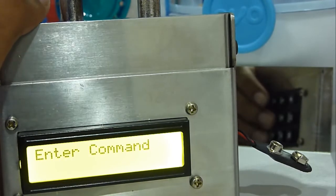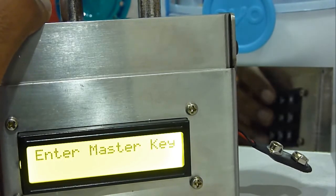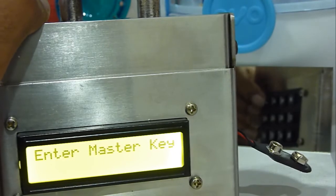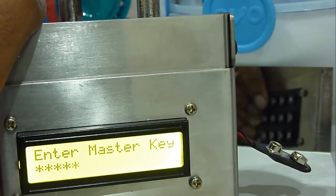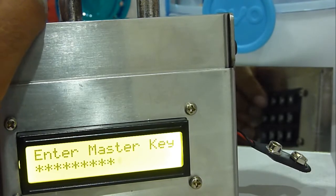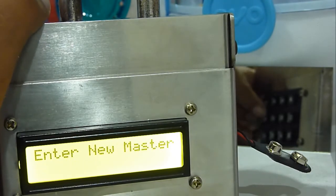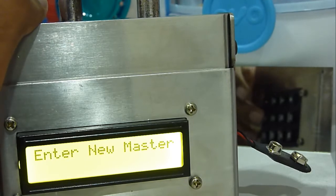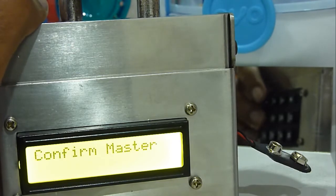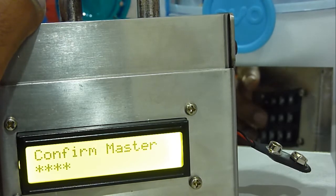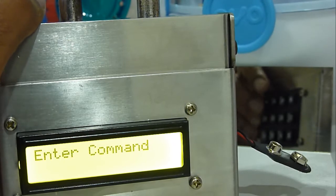Before I enter the master password, let's change the master password as well. To change the master password you have to press 5 and you'll be asked for the current master password which is all one, and you enter the new password. Let's set it as all two. It will ask for a confirmation. So the master password has been changed.